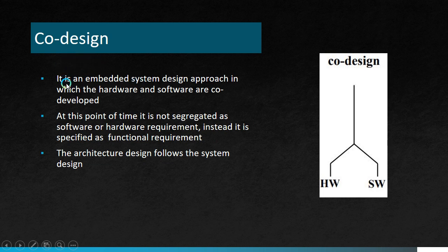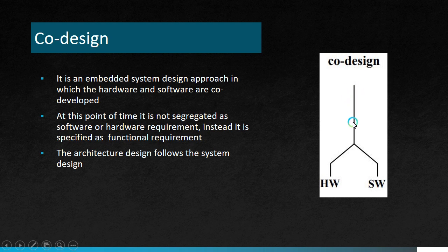Co-design is an embedded system design approach in which hardware and software are co-developed. At this point, it is not segregated as a software or hardware requirement; instead, it is specified as a functional requirement. Hardware and software will work together and will only be split at the end to satisfy functional requirements. The architecture design follows the system design, meaning we get a system design and create the architecture design accordingly.